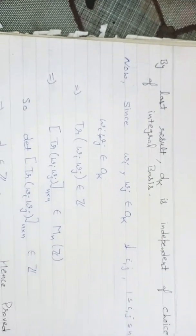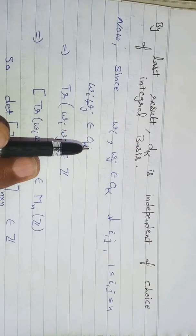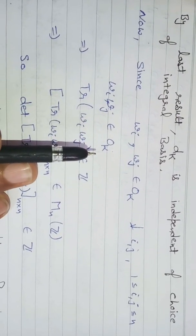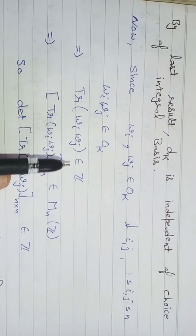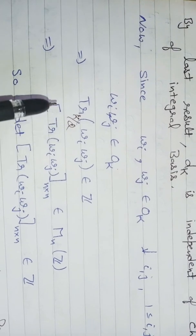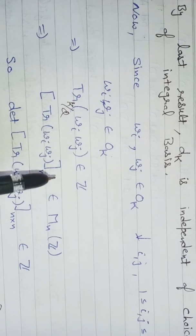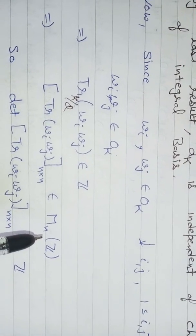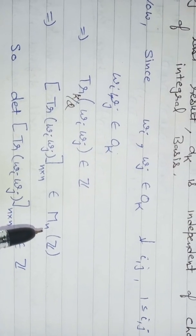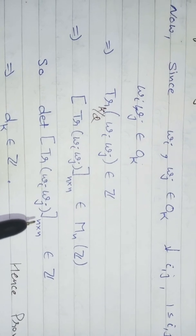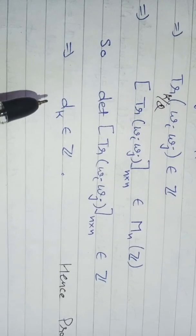Next we show that d_K is always an integer. Since w_i and w_j are algebraic integers, w_i · w_j belongs to O_K, and O_K is a ring of algebraic integers so their product also belongs to O_K. We know that the trace of an algebraic integer is always an integer, so trace_{K/Q}(w_i · w_j) belongs to Z. This means the trace matrix has entries in Z, so it belongs to M_n(Z), the set of all n×n matrices over Z. Since the determinant of a matrix with integer entries is an integer, the discriminant d_K is always an integer.